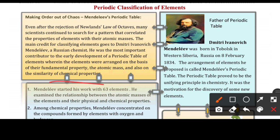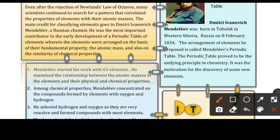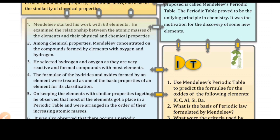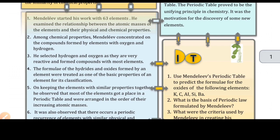Mendeleev was born in Tobolsk in West Siberia, Russia, on 8 February 1834. His arrangement of the modern periodic table proposed a unifying principle in chemistry. It was also the motivation for the discovery of some new elements, as his table had gaps left for undiscovered elements.